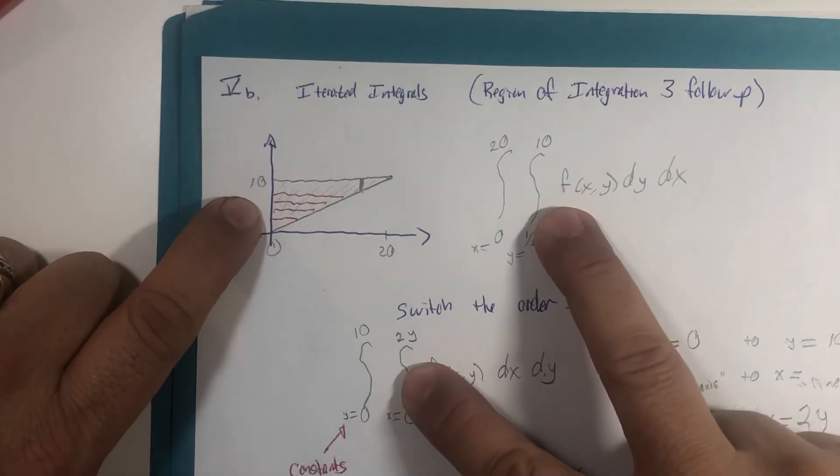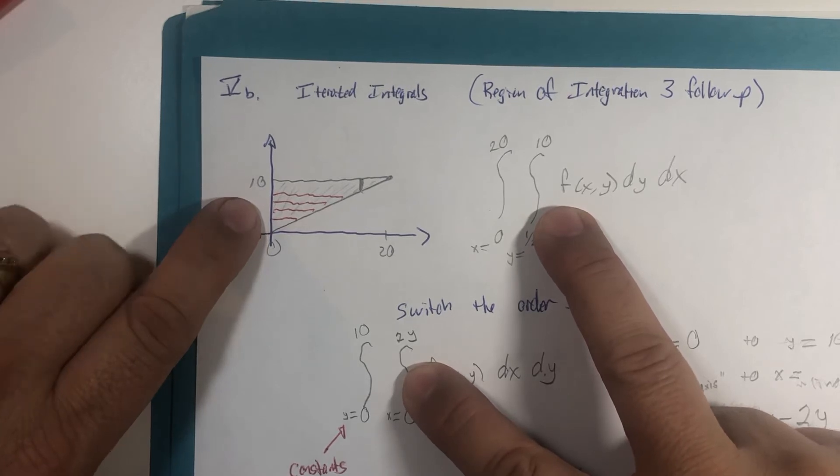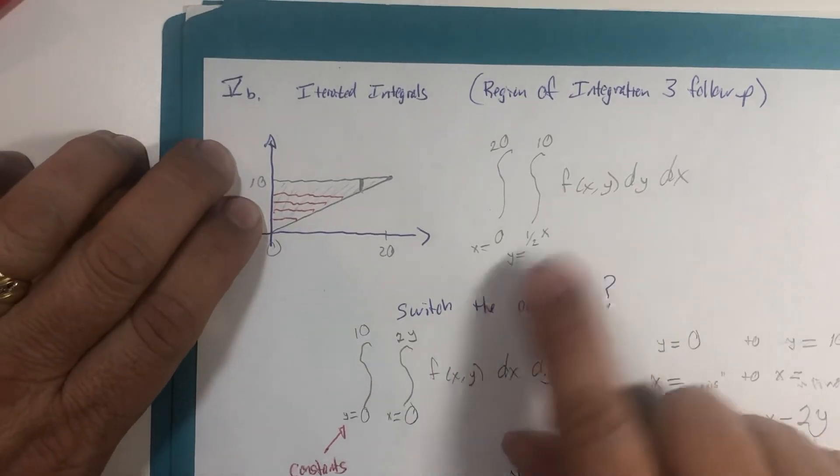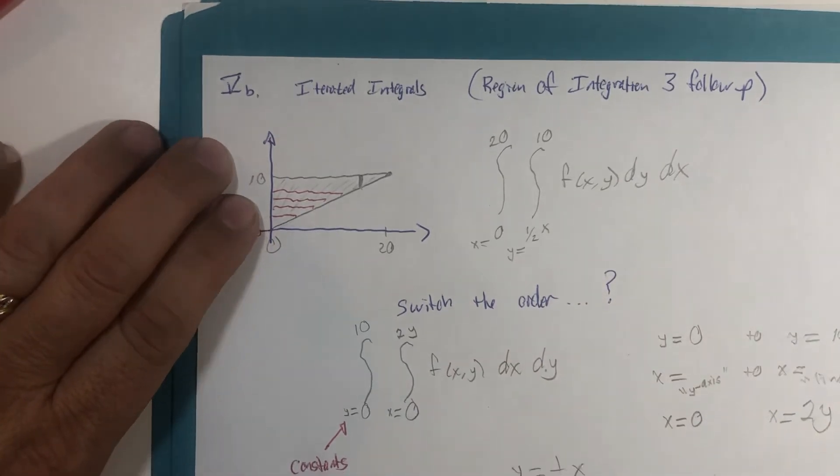Now, why would we want to be able to switch? Well, we'll get into that a little bit later in more videos. But one of the big reasons is that one of the integration orders may be harder than the other. But we have to see an example for that to make sense.